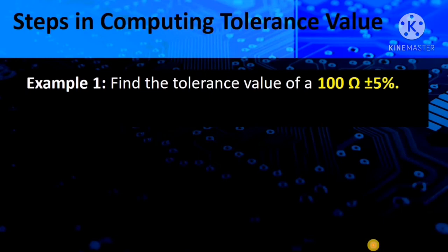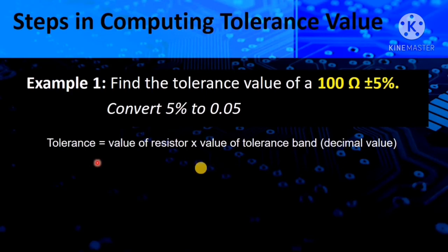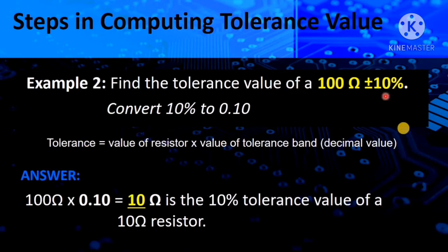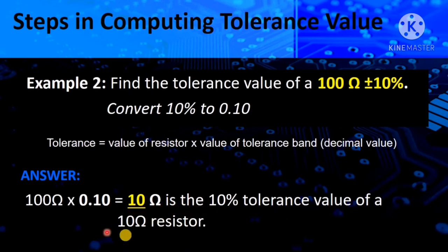Here is the example. Find the tolerance value of a 100 ohms plus or minus 5%. Convert 5% to 0.05. Using the formula: 100 ohms times 0.05 equals 5 ohms — that is the 5% tolerance value of a 100 ohms resistor. For 100 ohms plus or minus 10%: convert 10% to 0.10. Using the formula: 100 ohms times 0.10 equals 10 ohms — that is the 10% tolerance value of a 100 ohms resistor.